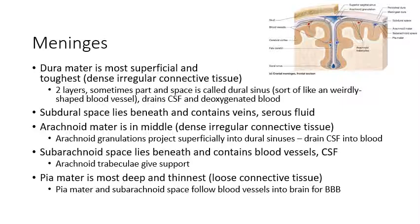Beneath the arachnoid mater, you have the subarachnoid space, which contains most of the blood vessels supplying the brain with oxygen, and it's also filled with cerebrospinal fluid. Crossing the subarachnoid space, you have arachnoid trabeculae, which prop it up so that it doesn't collapse. Then beneath that, you have the pia mater — the thinnest and deepest membrane surrounding the brain, made of loose connective tissue.